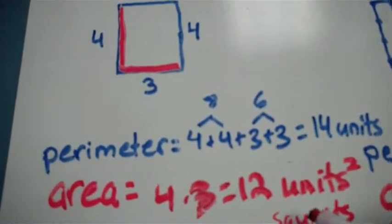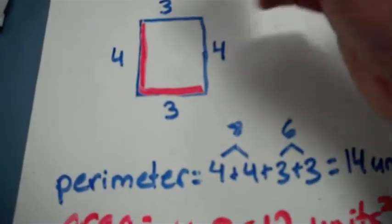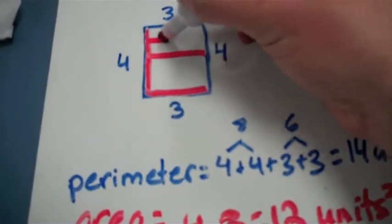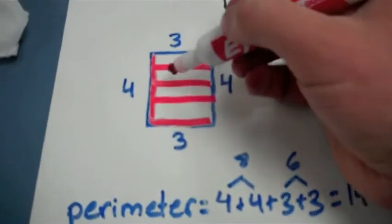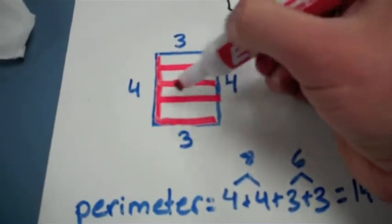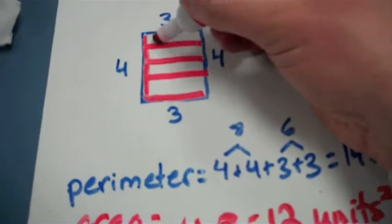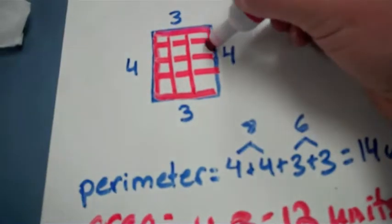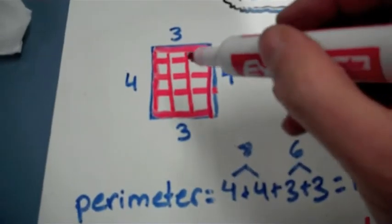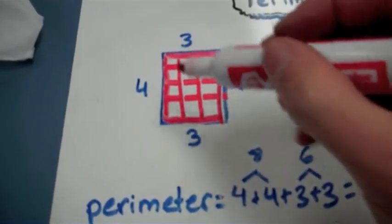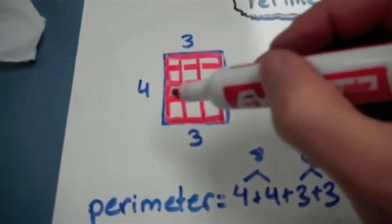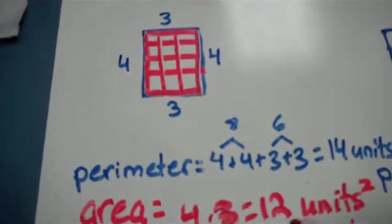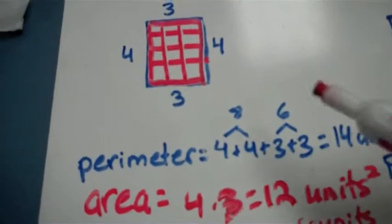I use square units because area is actually the inside portion. And that's measured in squares. As you can see right now, I'm dividing up my rectangle into 4 for the length and 3 for the width. And that gives me 12. 3 plus 3 plus 3 plus 3, or 4 plus 4 plus 4. They both make 12 square units. So that's how to find the area.